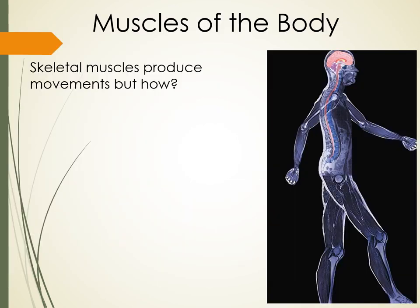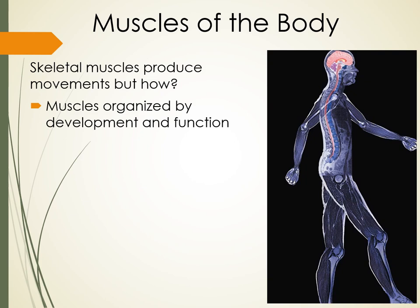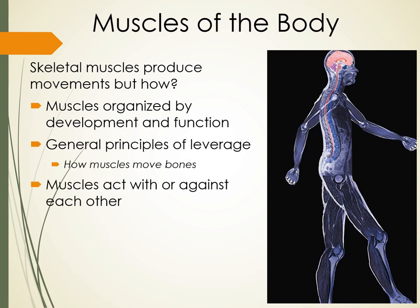Skeletal muscles produce movement, and we covered a lot of those movements in the joints. They're organized in a certain way in the body — one way is by development, and another way is by function. A huge concept is that muscles use leverage. A leverage system is how our muscles move the bones via the joints, so we'll talk about our three different types of levers in the body.